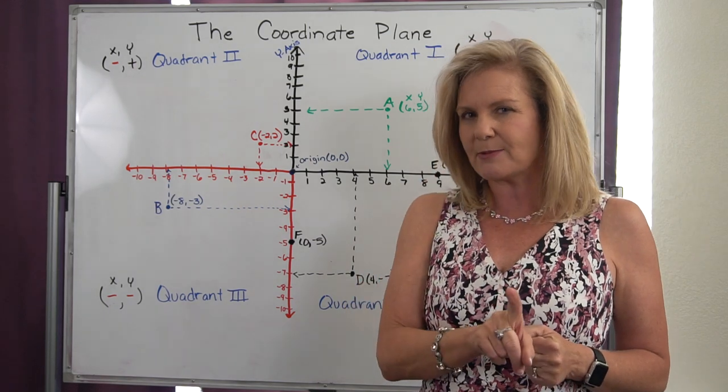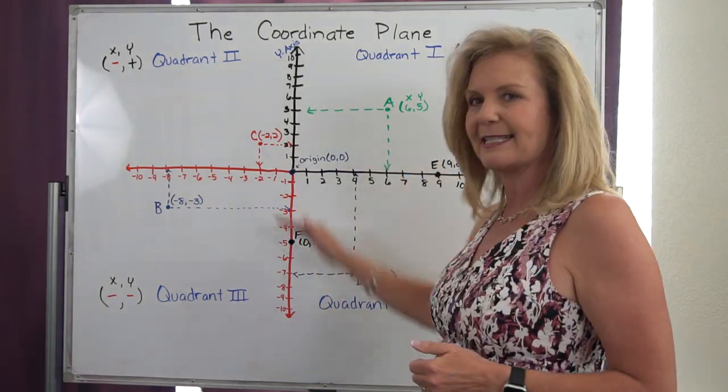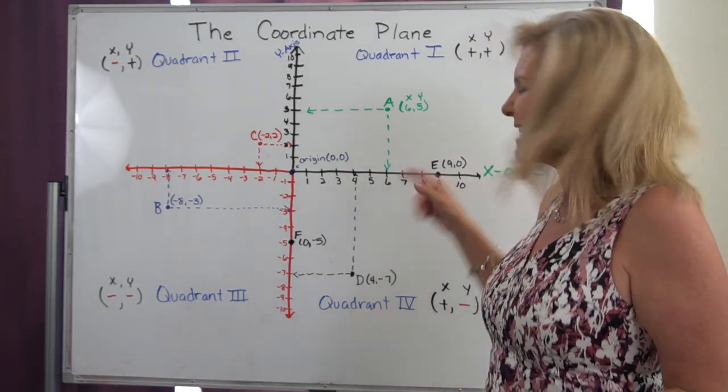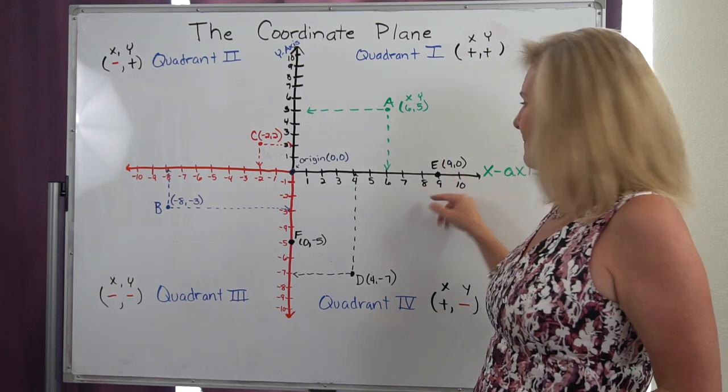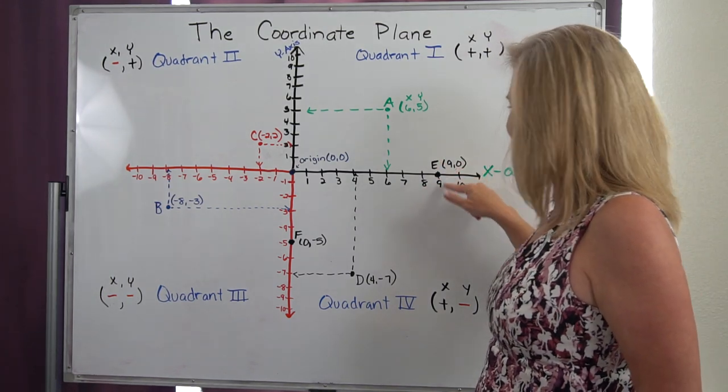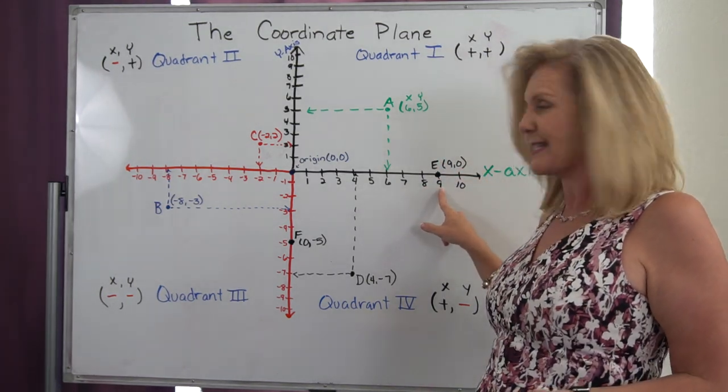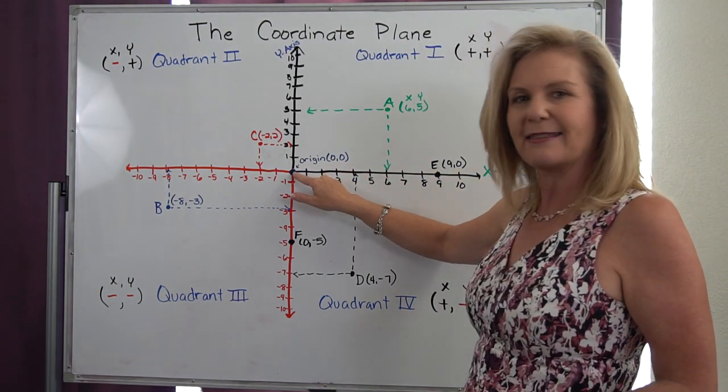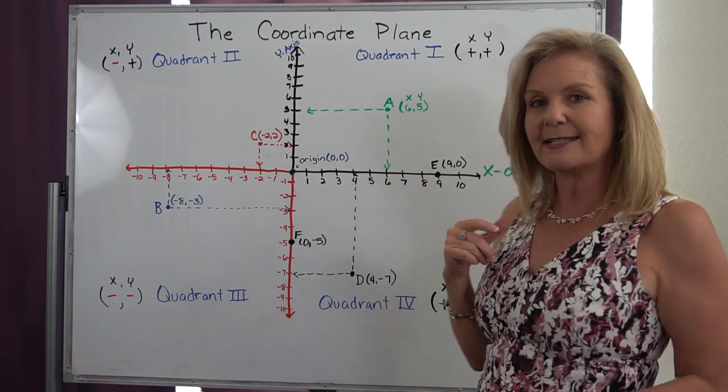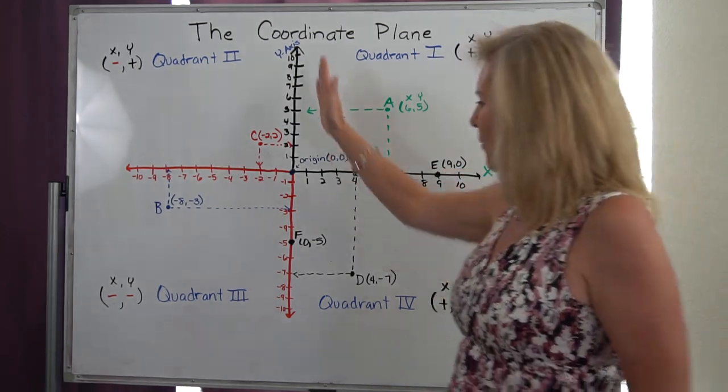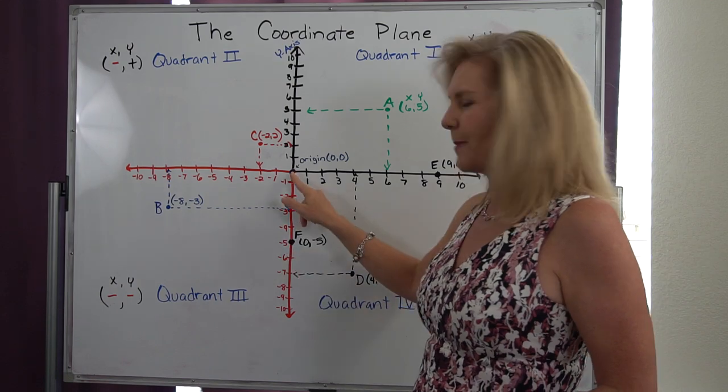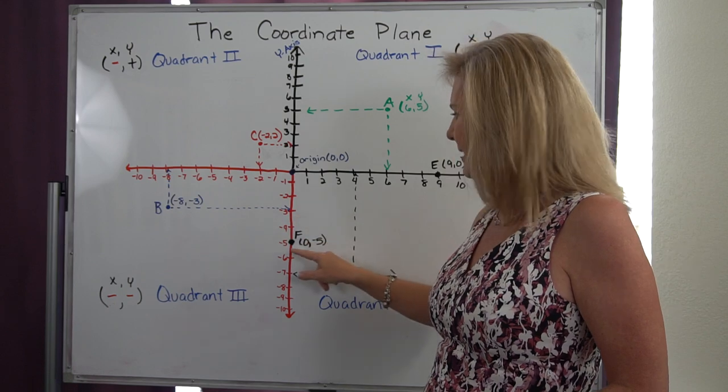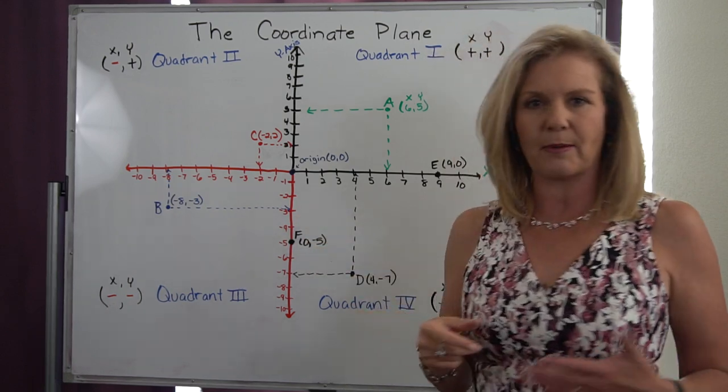Sometimes we have points that actually fall on the axes themselves. So if you see a point on an axis, it's okay. This point E, if I go across, notice it's at 9 on the x-axis. But when I come across to get my y, that y is actually at the 0 point. So on the x-axis, it would be at (9, 0). On the y-axis, remember my x goes first. So that has to be at the position of 0 on my x and negative 5 on my y.